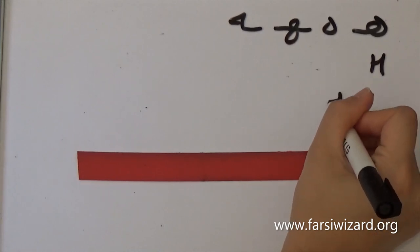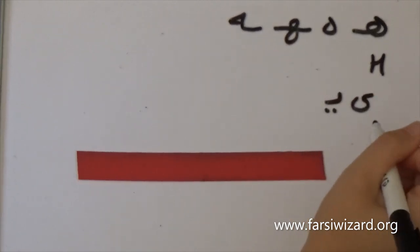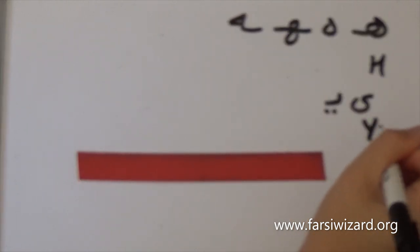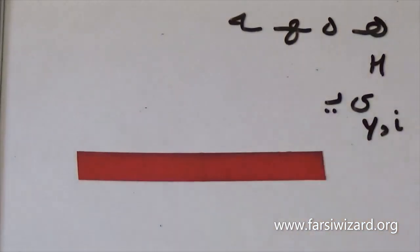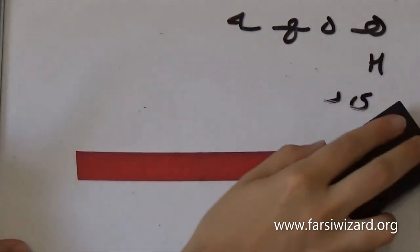The second letter we're going to learn today is Y, which is the equivalent of Y or I in English. I'm going to show you how this letter appears in different words and how you're supposed to read it. So let's get started.